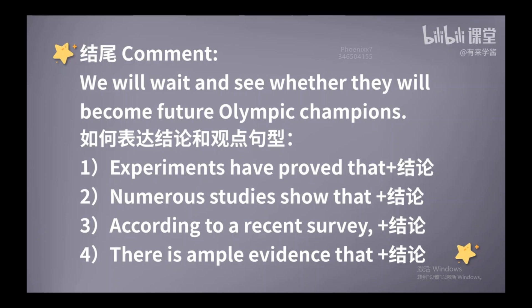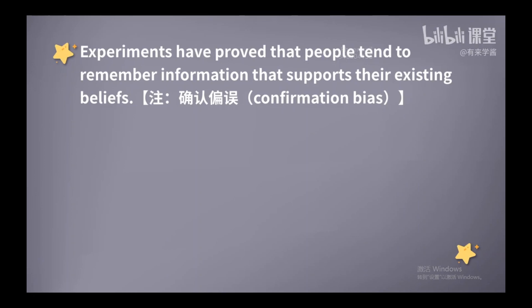倾向于在英文里可以说 tend to do something，已经存在的观念可以说 existing beliefs。好，这句话我们可以这样来表达：Experiments have proved that people tend to remember information that supports their existing beliefs. 这个结论呢，就是心理学上的一种现象，叫做确认偏误，confirmation bias。所谓的confirmation bias，就是说我们常常会选择性地去记忆那些支持我们原有观点的证据。这就是典型的确认偏误，说得通俗一点，人们都倾向于去听自己喜欢听的话，这样就造成了自己认知上的一种偏差。